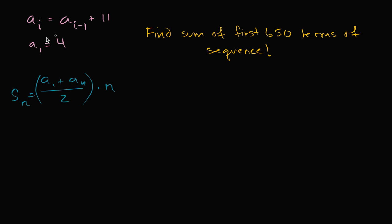So what about this one right over here? What is the first and the last term going to be, and what is our n? Well, we know that n is 650, and we know what the first term is going to be. The first term is going to be four, but we need to figure out what the 650th term is going to be.